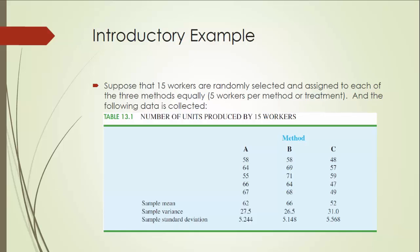Suppose that 15 workers are randomly selected and assigned to each of the three methods equally — five workers per method or treatment. The table below summarizes the data. For example, five workers assigned to method A produce 58, 64, 55, 66, and 67 units per week respectively. Once we get the data, it's easy to compute the sample mean, sample variance, and sample standard deviation. Later on, we are going to repeat this calculation in IPython notebook.